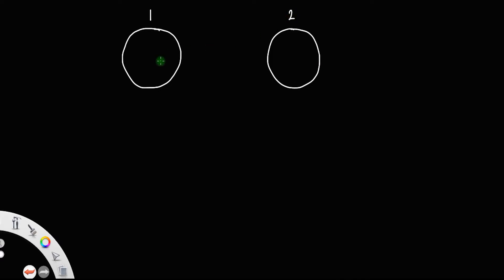Let us consider two identical bodies — body one and body two. The temperature of the first body is 100 degrees Celsius and that of the second one is zero degrees Celsius. Let c1 represent the specific heat capacity of the first body and c2 that of the second body. It is given that the body at higher temperature has higher specific heat capacity, so c1 is greater than c2.